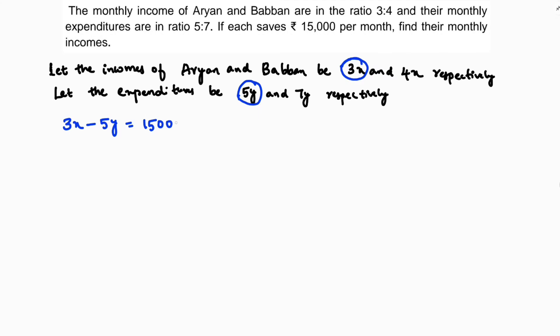For Babban, income is 4x, expenditure is 7y, and here also it is 15,000.